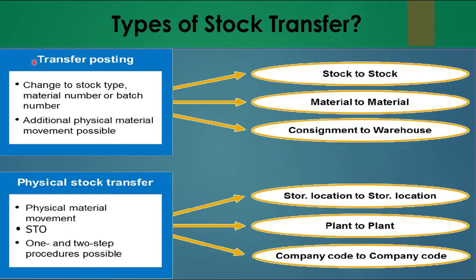There are two main categories: transfer postings and physical stock transfers. Transfer postings are used to change the stock type or material number — for example, in a material-to-material transfer — or for any additional physical movement like consignment to warehouse or subcontracting stock to vendor stock.